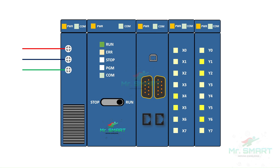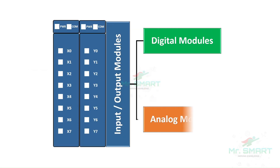PLCs use input and output modules to interact with external devices, and there are two main types of I/O modules: digital I/O modules that handle binary signals, and analog I/O modules that handle continuous signals.